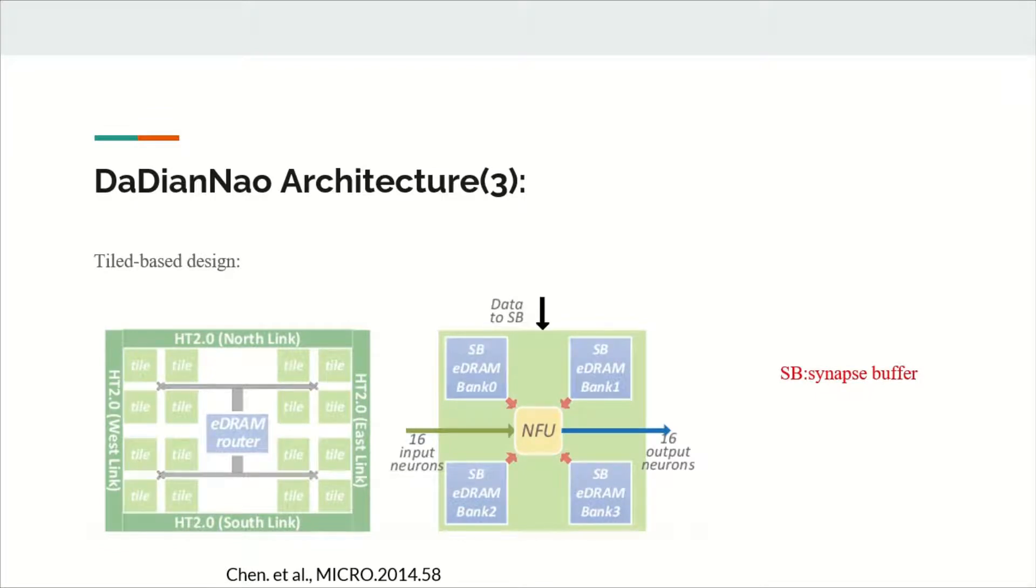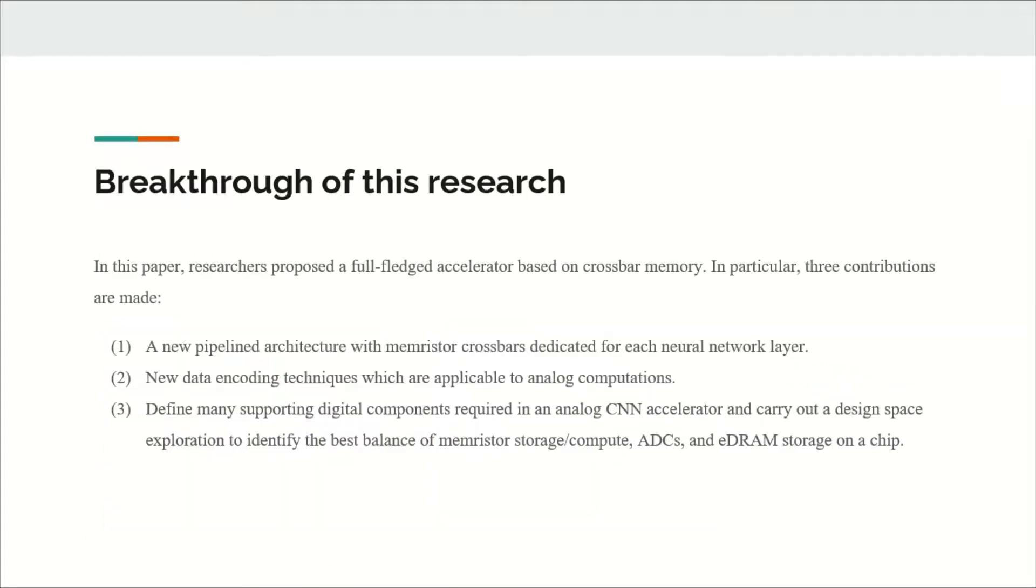And the last feature is the tile-based design. The output neurons are spread out in the different tiles, so that each neuron function unit can simultaneously process 16 input neurons. The figure on the left shows tile-based organization of a node. All the tiles are connected through a flat tree, which serves to broadcast the input neurons' variables to each tile, and to collect the output neurons' variables from each tile. At the center of the chip, there are two special embedded DRAM banks, one for input neurons, the other for output neurons. And the right figure shows the tile architecture. Every tile architecture consists of a neuron function unit with four embedded DRAMs used to store SNAP's buffer.